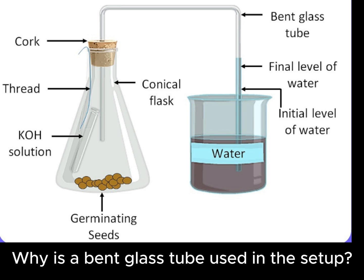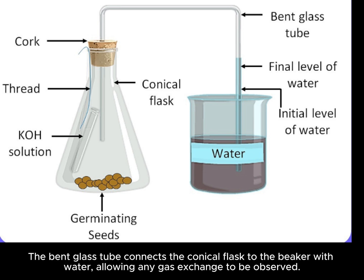Why is a bent glass tube used in the setup? The bent glass tube connects the conical flask to the beaker with water, allowing any gas exchange to be observed.